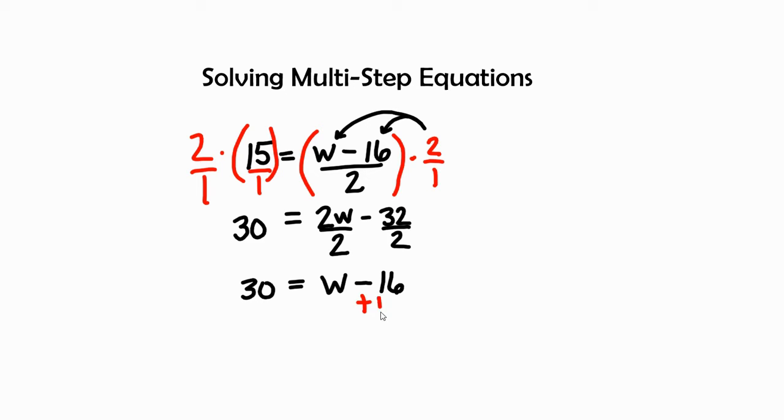I'm going to add 16 to both sides. When I add 16 to both sides, I'm going to see that I have 30 plus 16 is 46.